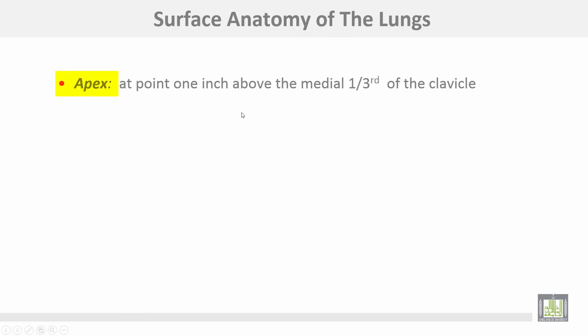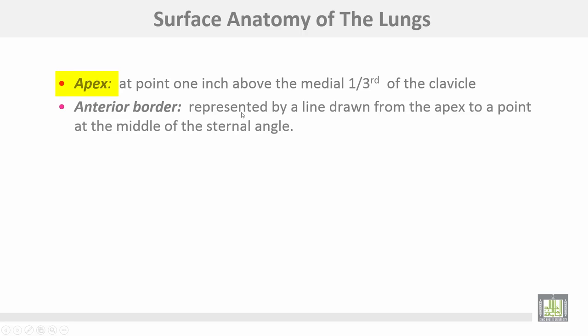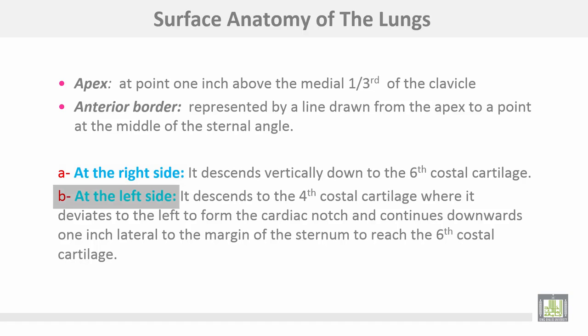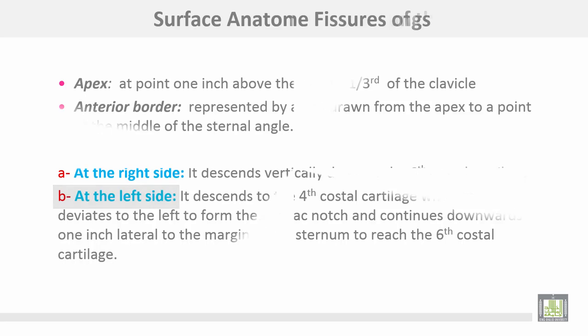The surface anatomy of the lungs: the apex is at a point one inch above the medial third of the clavicle. The anterior border is represented by a line drawn from the apex to a point at the middle of the sternal angle. On the right side, it descends vertically down to the sixth costal cartilage. On the left side, it descends to the fourth costal cartilage where it deviates to the left to form the cardiac notch, and continues downwards one inch lateral to the margin of the sternum to reach the sixth costal cartilage.